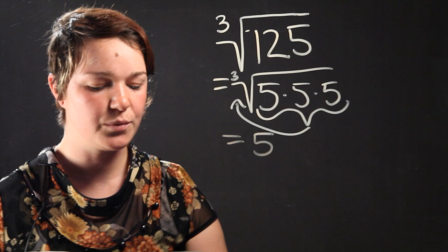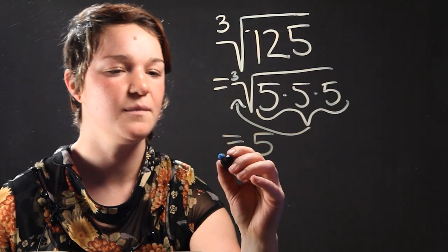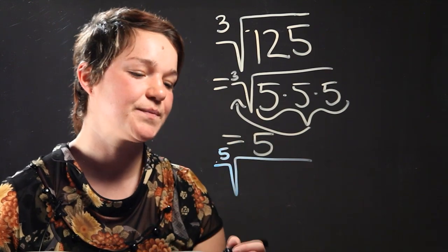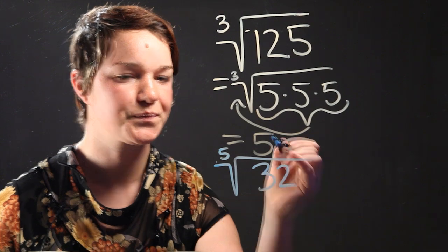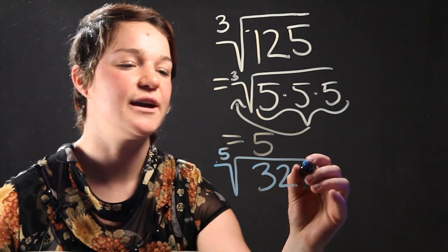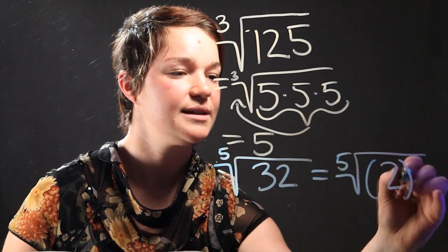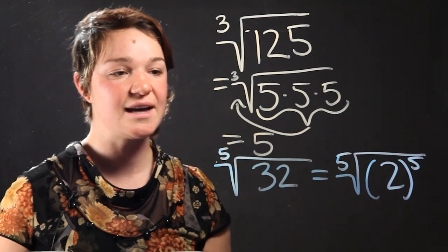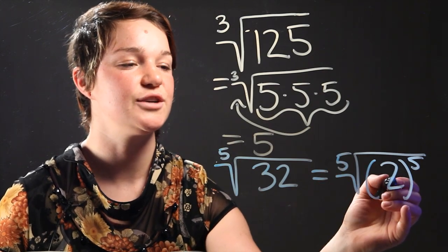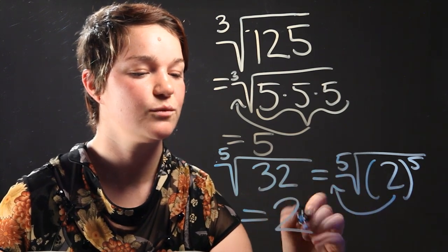Now let's do another example with an even greater index. The index is the number that's the power of the radical. So we'll have a radical with an index of 5. That's pretty difficult. And the number inside is 32. So how do you solve this? First you have to take this expression and find what it is equal to — this is equal to 2 to the 5th power. It's 2 multiplied by itself 5 times. And because this is the 5th root of 32, we're going to take the 2 outside and find the answer, which is simply 2.